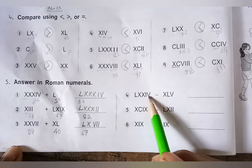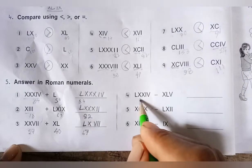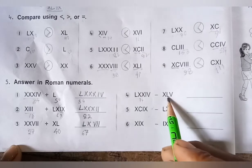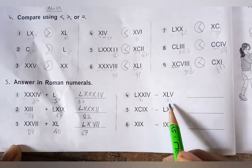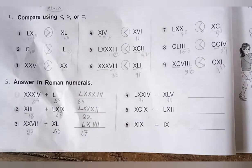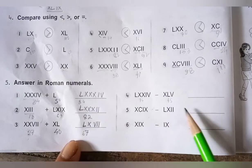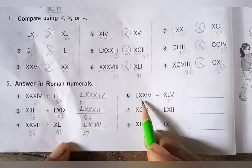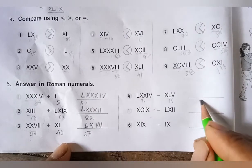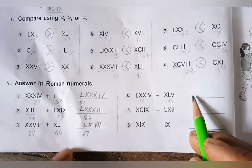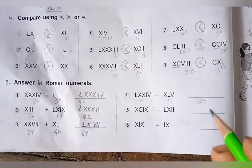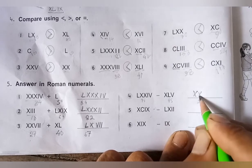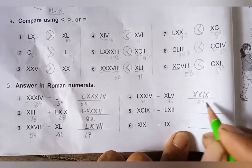Next: one numeral represents 74 (L is 50, XX is 20, so 70, plus 4), and the other represents 45. So 74 minus 45 equals 29. To write 29 in Roman numerals: XX is 20 and IX is 9, giving XXIX.